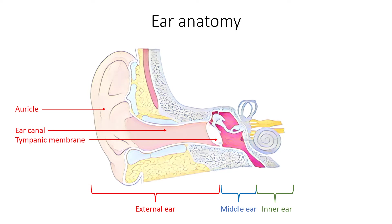Middle ear is connected to the pharynx through the Eustachian tube, which helps equilibrate air pressure across the tympanic membrane. This tube is normally closed but will pop open when the muscles of the pharynx contract during yawning or swallowing.